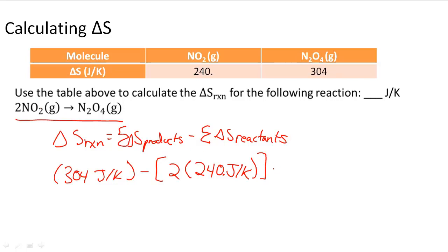So now we can do this problem. When we calculate it we see that the entropy change for the whole reaction is negative 176 joules per Kelvin.